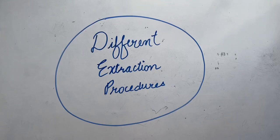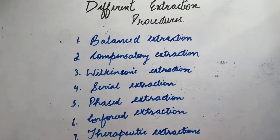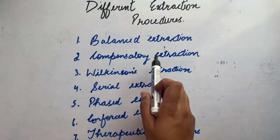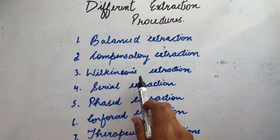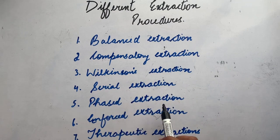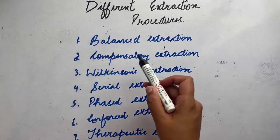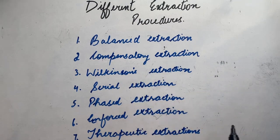Hello everyone, today we'll talk about different extraction procedures. There are seven different extraction procedures: balanced extraction, compensatory extraction, Wilkinson's extraction, serial extraction, phased extraction, enforced extraction, and therapeutic extraction. In the first part, we'll discuss balanced, compensatory, and Wilkinson's extraction.